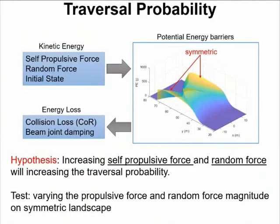In this problem of the traversal, the energy landscape may give us some ideas. Here is a hypothesis that a larger self-propulsive force and random force, there will be more kinetic energy in the system, and the traversal can be easier. So I test this hypothesis by using a symmetric landscape, which means the stiffness on each side are the same.